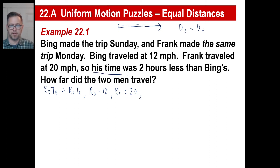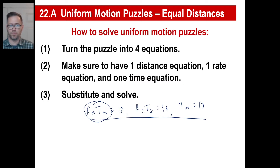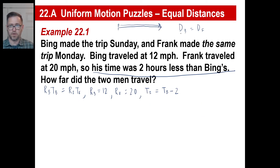Frank's time is two hours less than Bing's. Frank's time, T sub F — notice there's another T sub F in our distance equation — equals the time of Bing minus two. Now we don't know what any of these things are. We've done step one: turn the puzzle into four equations. Step two: we have a distance, we have a rate, we have a time, and there's our fourth equation.